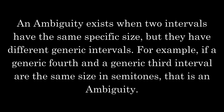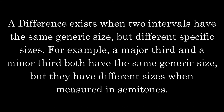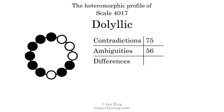An ambiguity exists when 2 intervals have the same specific size but different generic intervals — for example, if a generic 4th and a generic 3rd interval are the same size in semitones. The number of ambiguities in this scale is 56. A difference exists when 2 intervals have the same generic size but different specific sizes — for example, a major 3rd and a minor 3rd. The number of differences in this scale is 136.